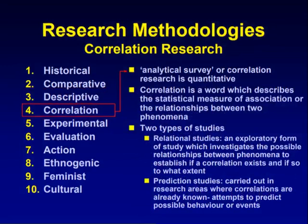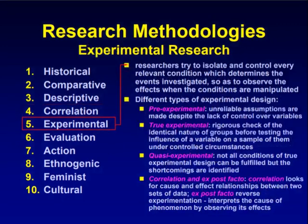In correlational research methodology, analytical survey or correlation research is quantitative. Correlation describes the statistical measure of association or the relationship between two phenomena. There are two types of studies: relational studies — an exploratory form of study which investigates possible relationships between phenomena to establish if a correlation exists and to what extent — and prediction studies, carried out in research areas where correlations are already known, attempting to predict possible behavior or events.